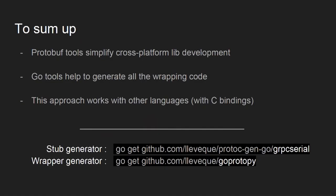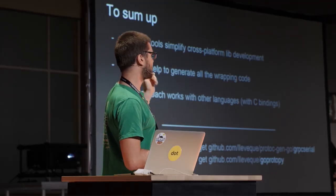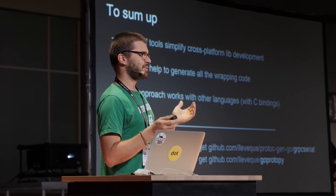To sum up: use Protobuf if you want to write a cross-platform library in Go. The standard Go tools will help you automate most of the tasks. This approach should work with a lot of other languages as long as they can be bound to C. I've written a stub generator and a wrapper generator and put them online yesterday, so feel free to study and use them if they are worth it. Thank you very much.